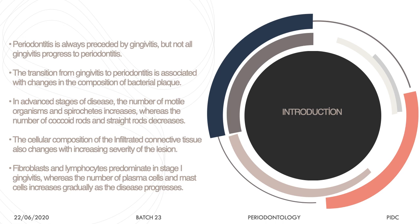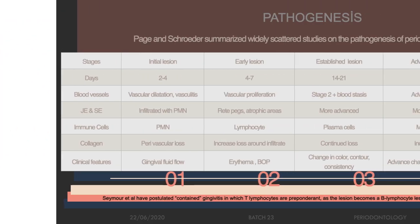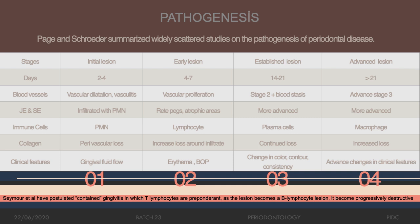Once it becomes a plasma cell or mast cell type of lesion, bone loss and tissue loss occur. The stages of gingivitis — initial, early, established, and advanced — are known. Most of the time gingivitis stays as gingivitis; even in advanced lesions no active pocket formation may happen. Only when there is a break in continuity between the junctional epithelium and the CEJ with apical migration of the junctional epithelium is the condition called periodontitis. Not all advanced gingivitis cases progress to periodontitis.